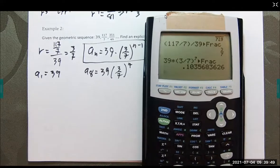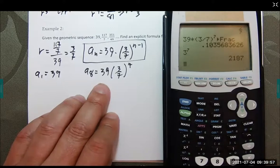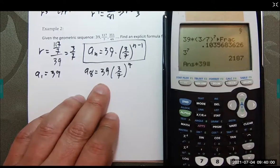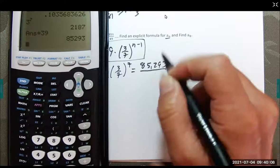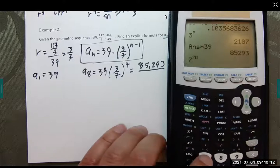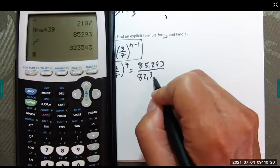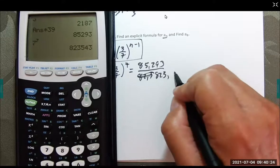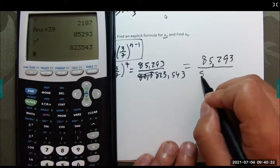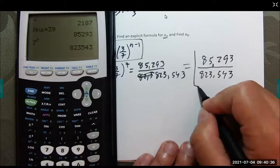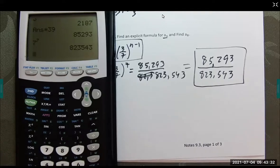This calculator can't do that, so we'll have to do this by hand. 3 to the 7th times 39. That's the numerator, 85,293. The denominator is 7 to the 7th power, which is 823,543. That is an insane number.